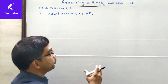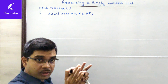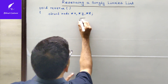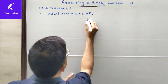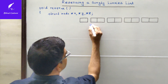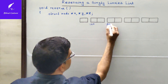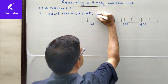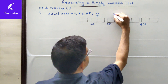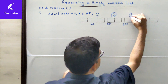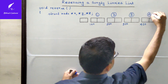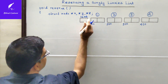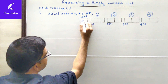After declaring these three node pointers, we will draw a linked list having four different nodes. Suppose the address of the first node is 100, the second node is 200, the third node is 300, and the fourth node is 400. The head pointer contains the address of the first node, which is 100.